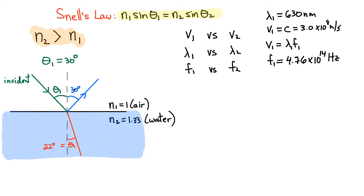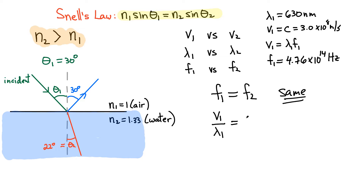I've characterized the speed, wavelength, and frequency in air. Now let's see what happens in medium 2. The important point is that frequencies do not change when light goes from one medium to another — the frequencies have to be the same. Since the frequency is the same, f1 equals V1 over lambda 1 equals V2 over lambda 2. The speed of light in any medium is equal to the speed of light in vacuum divided by that particular index — so V2 equals c divided by N2.